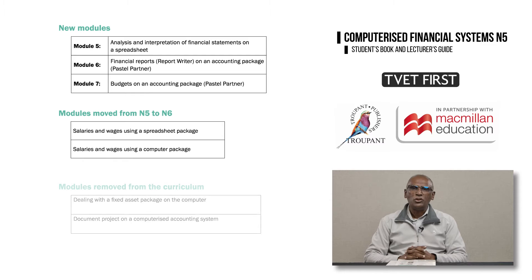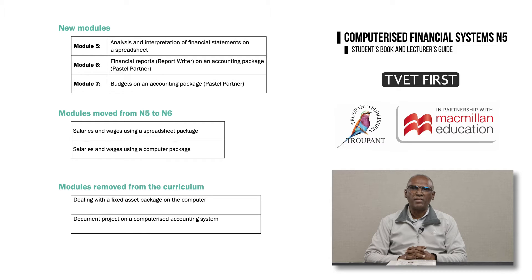Two modules have been removed from the new N5 syllabus altogether. The two removed modules are dealing with a Fixed Asset Package on the Computer and Document Project on a Computerized Accounting System.